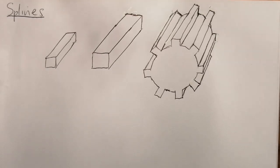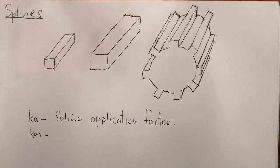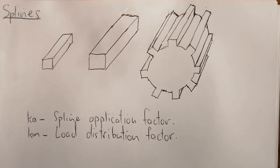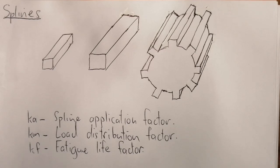Let's look at some of the variables we use in spline shaft design. We have KA, which is the spline application factor. KM is known as the load distribution factor — it helps account for misalignment. And lastly, KF is the fatigue life factor. All these factors are a type of factor of safety to secure a safe design in the end.